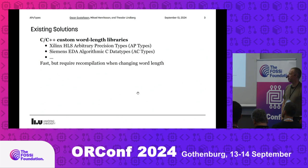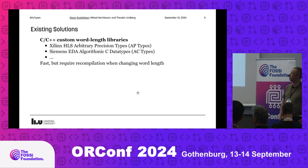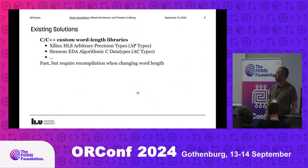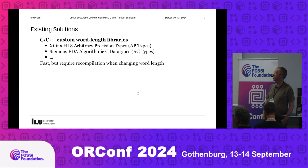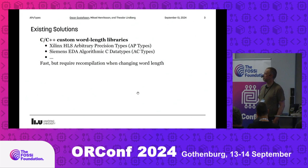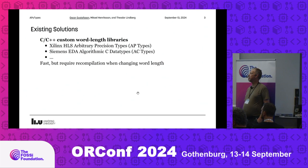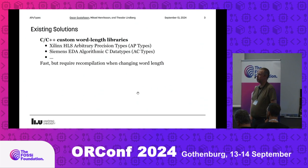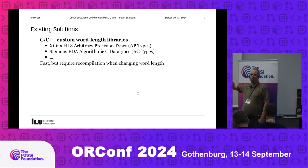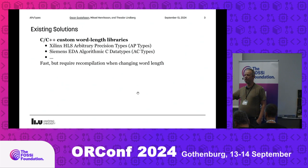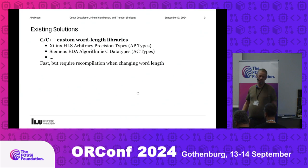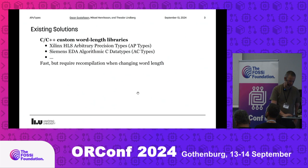People have seen this problem before. There are some C and C++ custom word-length libraries: Xilinx has AP types for Vivado, and Siemens Mentor has AC types, which are actually open source. You can simulate in a very efficient way — it's pretty fast. The main problem is it requires recompilation and extra steps if you want to actually look at the numbers; it's not like you can run it interactively like NumPy or just plot it.